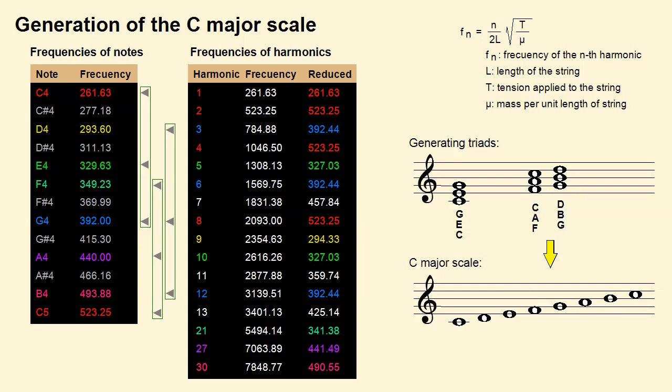An important detail to take into account is that in the generation process described above, chords were created on the notes C, F and G by adding two notes separated by intervals of third. In the video dedicated to the harmonization of scales we will apply this procedure to harmonize each of the notes of a scale.